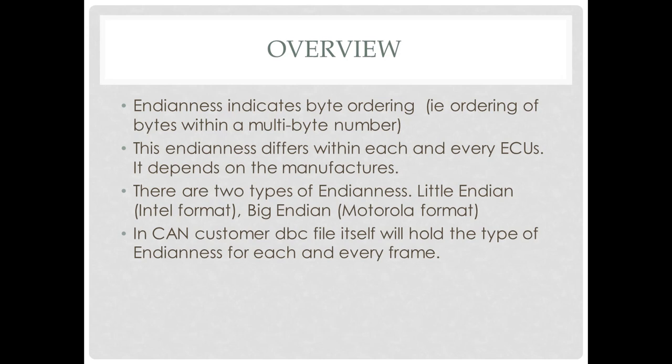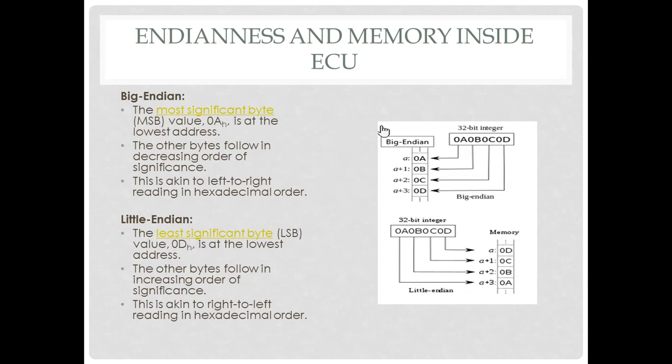With respect to a CAN frame, the Endianness format is provided by the customer in the DBC file. In the DBC file we can see which Endianness a particular frame belongs to. So to explain Endianness further — Endianness indicates the byte ordering of the signals inside a CAN frame.